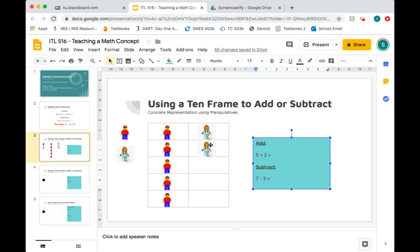The final step is to count how many Legos we have in total. One, two, three, four, five, six, seven. So we know that five added to two is going to be seven.